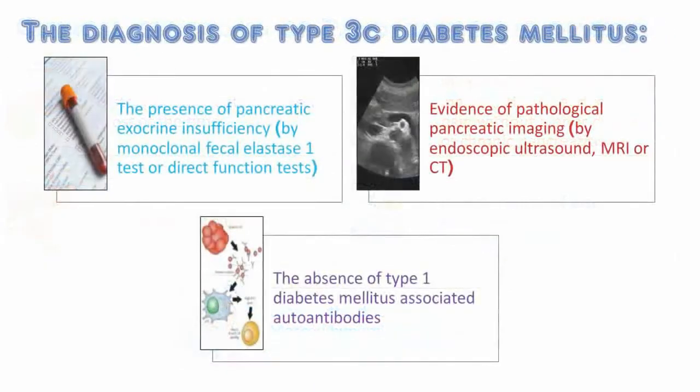The diagnosis of type 3c diabetes mellitus. At least the following three criteria should be met: first, the presence of pancreatic exocrine insufficiency by monoclonal fecal elastase-1 test or direct function tests; second, evidence of pathological pancreatic imaging by endoscopic ultrasound, MRI, or CT; and third, the absence of type 1 diabetes mellitus associated autoantibodies.